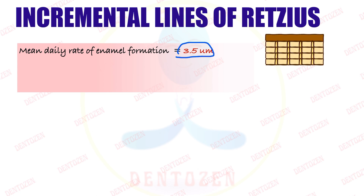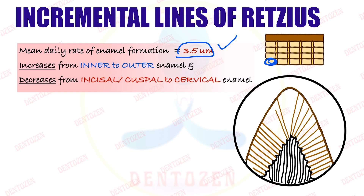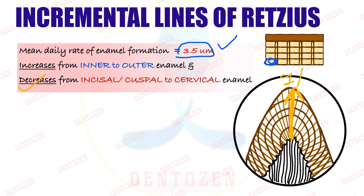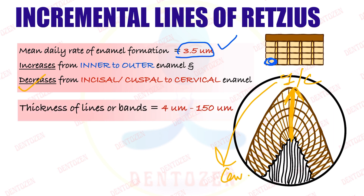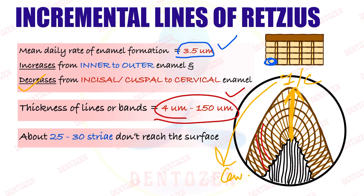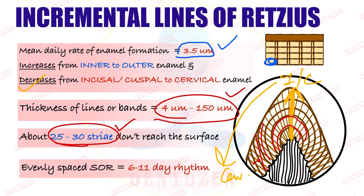The mean daily rate of enamel formation is 3.5 to 4 micrometers. This rate increases from inner to outer enamel and decreases from the incisal or cuspal region to the cervical region. Thickness of the bands ranges from 4 to 150 micrometers. Not all lines reach the surface — 25 to 30 striae do not reach the surface. These lines are evenly spaced when the weekly rhythm of 6 to 11 days is followed.